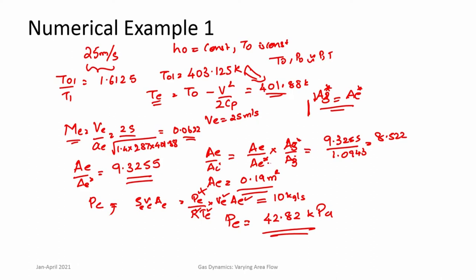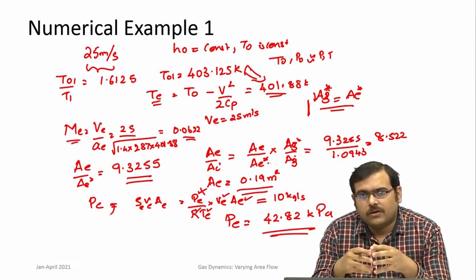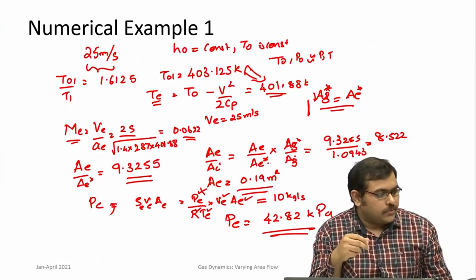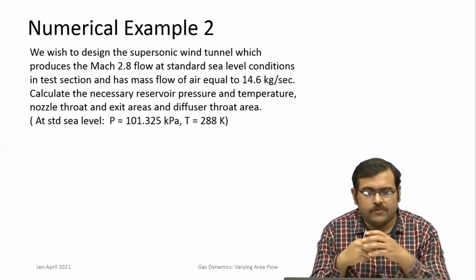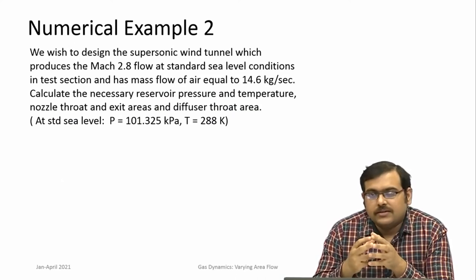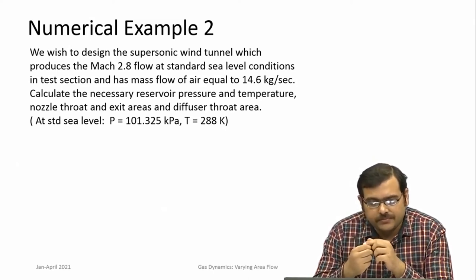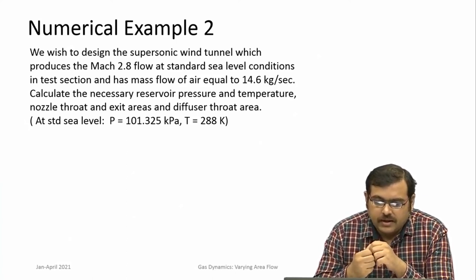Now let us go to the next problem. If we wish to design a supersonic wind tunnel which produces Mach 2.8 flow at standard sea level conditions at the test section, with mass flow m-dot = 14.6 kg/s, calculate the necessary reservoir pressure and temperature, nozzle throat and exit areas, and diffuser throat area.